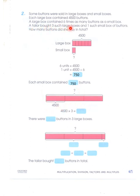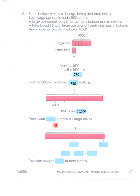The tailor bought 3 large boxes and 1 small box. So what will be the total buttons in 3 large boxes? 4,500 multiplied by 3 equals 13,500. There were 13,500 buttons in the 3 large boxes.